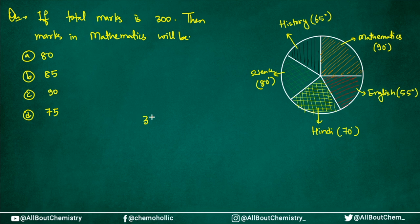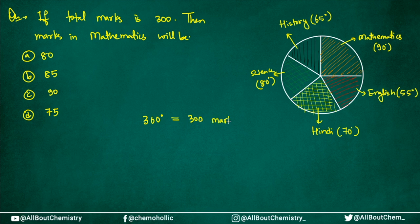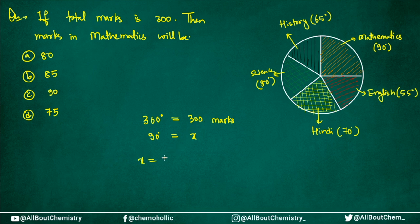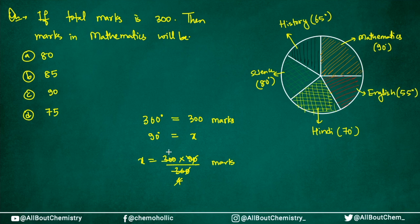The same approach applies. The pie chart gives a total of 360 degrees, and here 360 degrees is not equivalent to 100 percent but to 300 marks — because the total marks is 300. So 360 degrees equals 300 marks. We are given 90 degrees for mathematics, and we want the marks — call it x. Cross multiply: x equals 300 times 90 divided by 360. The zeros cancel, and dividing gives 75 marks in mathematics.